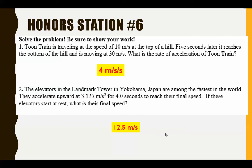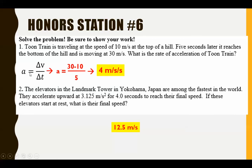On station 6, we have a train traveling at a certain velocity or speed at the top of a hill, a time until it reaches the bottom, and a final velocity as well, and we want to know the acceleration. For this one, we need to use our acceleration equation. We know that the velocity final was 30 and it started at 10, so that's a difference of 20 divided by 5 — you get 4 meters per second per second.